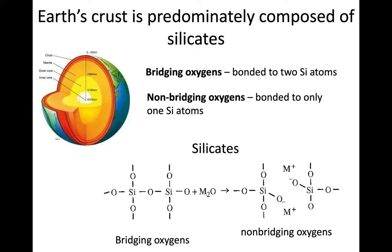We're talking about silicates for the most part. The reason we care about silicates is because Earth's crust is predominantly composed of these materials. They're very prolific.